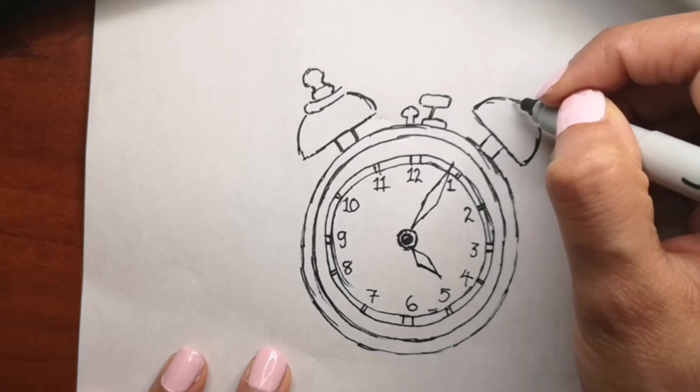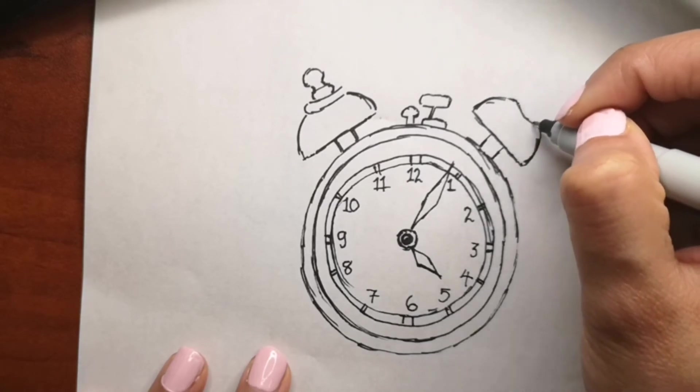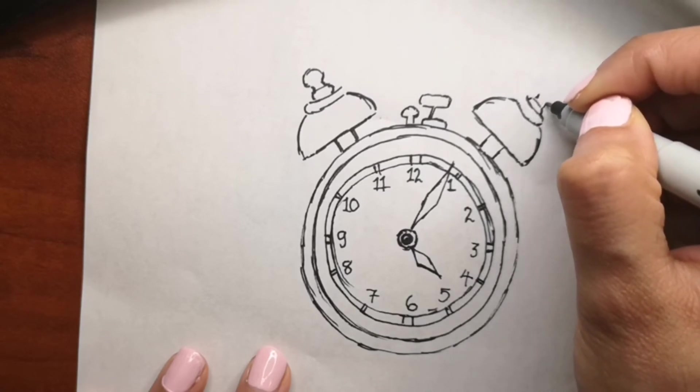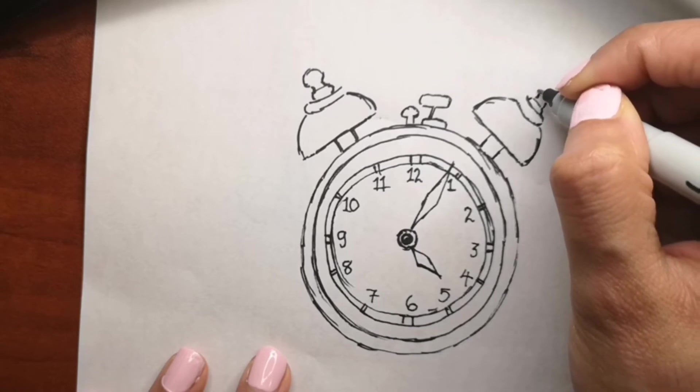An institution in Colorado created a clock so accurate it won't lose or gain a second in 20 million years. This is the clock used for internet time. Wow, that's interesting.